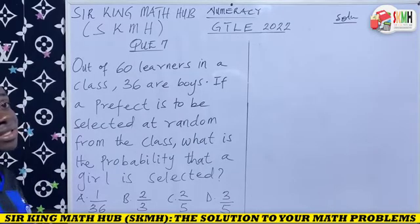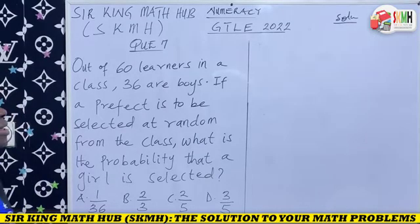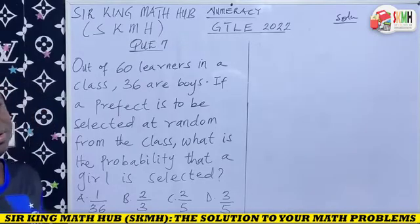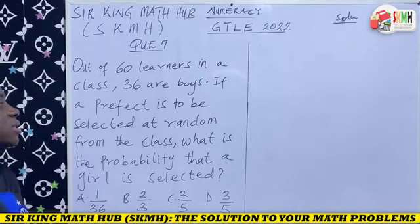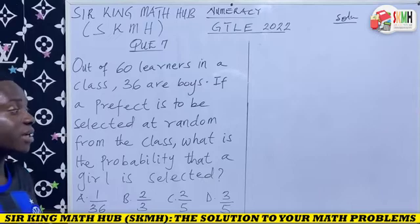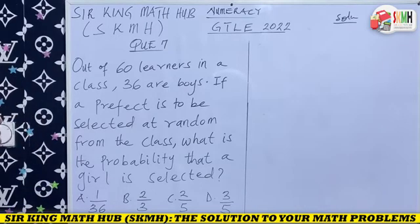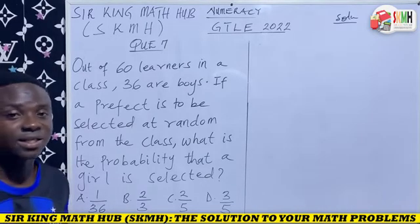Objective number 7. Out of 60 learners in the class, 36 are boys. If a prefect is to be selected at random from the class, what is the probability that a girl is selected?